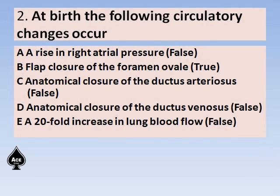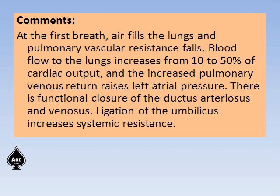Rise in right atrial pressure is false — in intrauterine life the right side has more pressure, but in extrauterine life the left pressure is more. Flap closure of the foramen ovale is true — that is how the right-to-left shunt is stopped at birth. Anatomical closure of the ductus arteriosus at birth is incorrect — it is actually functional closure which occurs initially; anatomical closure takes more time for thrombus to form. Anatomical closure of the ductus venosus also happens a little later. A 20-fold increase in lung blood flow is not accurate — at the first breath, air fills the lungs and pulmonary vascular resistance falls; blood flow to the lungs increases from 10 to 50 percent of cardiac output, and the increased pulmonary venous return raises the left atrial pressure. There is functional closure of the ductus arteriosus and venosus.